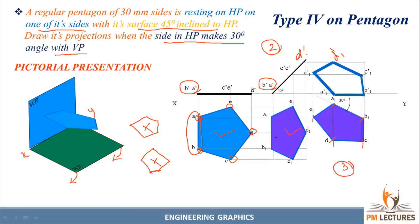This is the final step. The parameter of the pentagon in Step 3 and Step 2 will be similar. After doing the projection, we get the final output. The final shape is drawn darkest, and the projection lines are drawn very lightly. To summarize: draw the initial position parallel to HP, apply surface inclination as Step 2, apply edge inclination with VP as Step 3, and project to get the final result. That's all, guys — thank you.